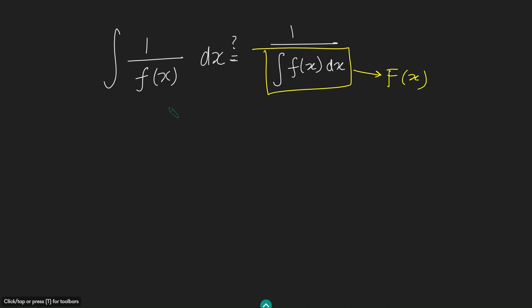And so if I write this in terms of capital F, I get one over f prime of x dx, because of course, little f is just the derivative of capital F because of this. And that equals one over f of x.